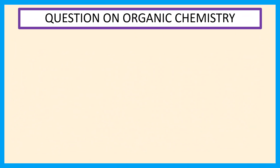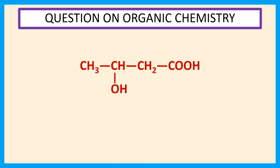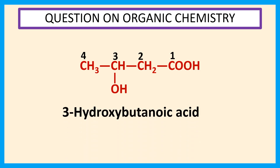Our given compound is CH3CHOH CH2COOH. First, we number the long carbon chain: 1, 2, 3, 4. In this compound, the OH group is at position 3 and the COOH group is at position 1. Therefore, the IUPAC name of the compound is CH-hydroxybutanoic acid.